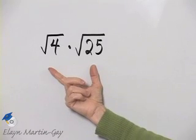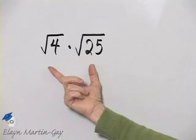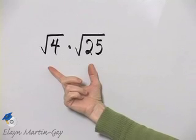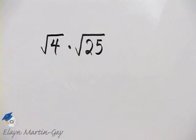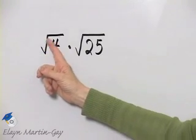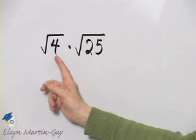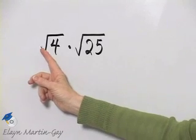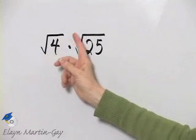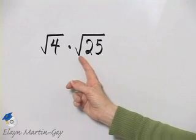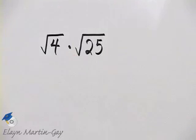Let's evaluate this expression, keeping in mind order of operations. Remember, we work within grouping symbols first, and here we can think of this square root sign or this radical as a grouping symbol. So let's find the square root of 4, then we'll find the square root of 25, then we will multiply those two numbers together.